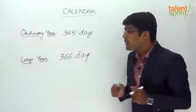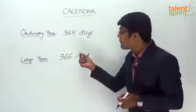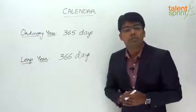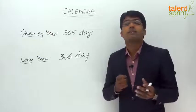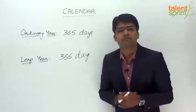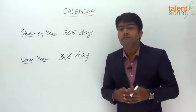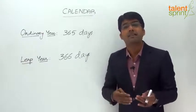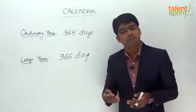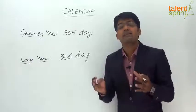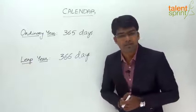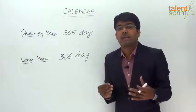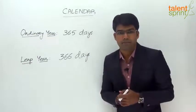Why do we have a leap year? The reason is to keep our calendar in alignment with the Earth's revolution around the sun. The Earth takes 365 days, 5 hours, 48 minutes, and 46 seconds — approximately 365 days and 6 hours, or 365 complete days and one quarter of a day — to complete one circle around the sun. Hence an ordinary year, though considered to have 365 days, actually has 365 and a quarter of a day.